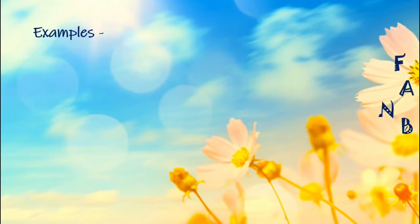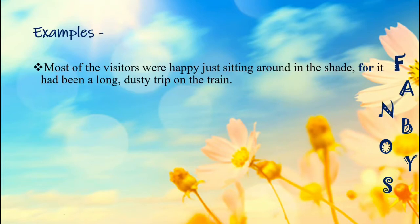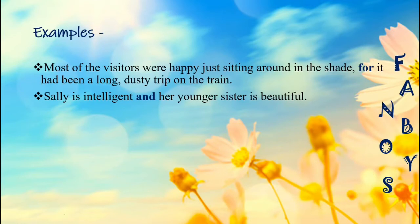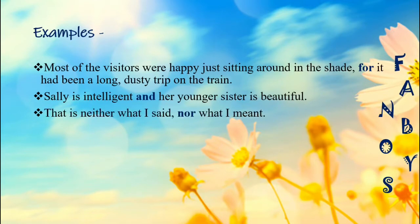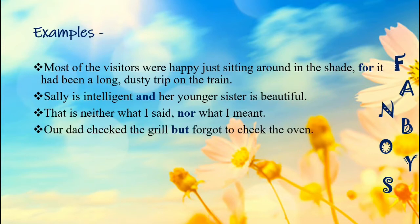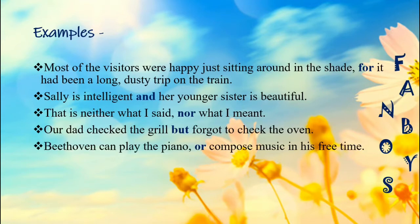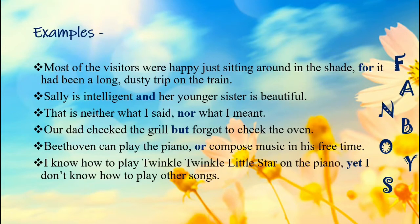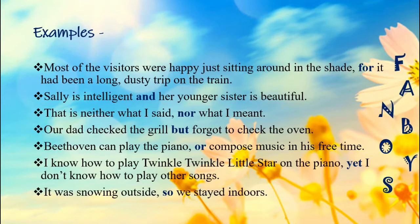Let's now read a few examples of coordinating conjunctions. Most of the visitors were happy just sitting around in the shade, for it had been a long dusty trip on the train. Sally is intelligent and her younger sister is beautiful. That is neither what I said nor what I meant. Our dad checked the grill but forgot to check the oven. Beethoven can play the piano or compose music in his free time. I know how to play Twinkle Twinkle Little Star on piano, yet I don't know how to play other songs. It was snowing outside so we stayed indoors.